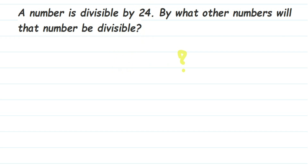To explain this question, I'm going to take a small example. Let us take a number to be 12. In the given question they have not given the number — they have just said a number is divisible by 24. So I'm taking 12 here just to explain, and I'm saying that 12 is divisible by 6.